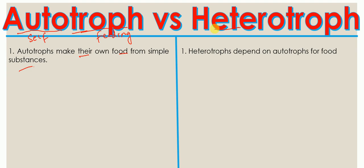Now if you look at the word heterotroph, hetero means other, and troph means feeding or nourishment. That means heterotrophs depend on autotrophs for food. So autotrophs make their own food whereas heterotrophs depend on others, specifically autotrophs, for food.